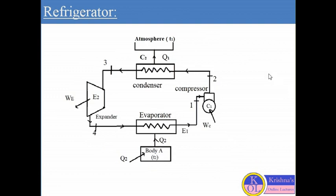Let us consider a body A which is maintained at temperature T2. In this diagram, this body is maintained at temperature T2, and the temperature of body A is less than the temperature of the atmosphere. Here we are considering the temperature of atmosphere is T1, so T1 is greater than T2. Now, even if body A is insulated, there is always some heat Q2 absorbed by body A from the atmosphere, which will increase the temperature T2.